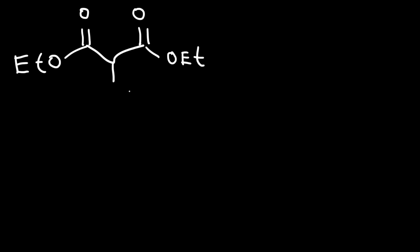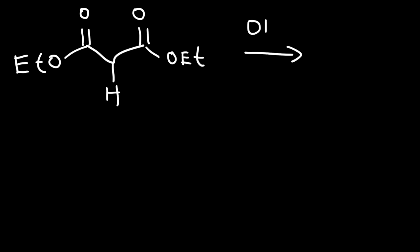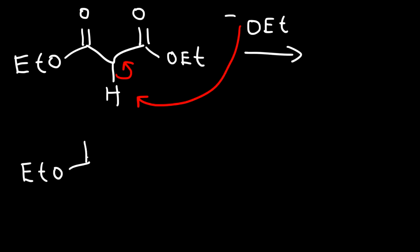There are two acidic alpha hydrogen atoms on this carbon. The first step is to use a strong base, like ethoxide, to remove one of those two acidic hydrogen atoms. After this step, we're going to have a negative charge on the alpha carbon.